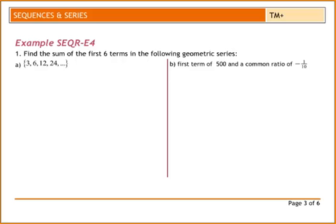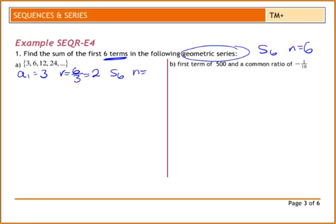Find the sum of the first six terms in the following geometric series: 3, 6, 12, 24. Now it does tell me it's geometric, so I don't need to prove that, and we're looking at the first six terms, so we want S of 6, so n is 6. So I write out what I have. A1 is 3, r is going to be 6 divided by 3 is 2. I want S of 6, so n is 6. Write my formula.